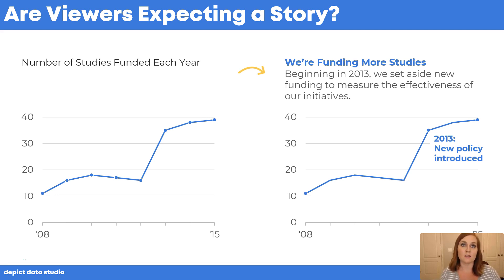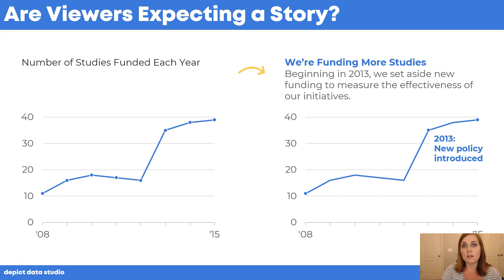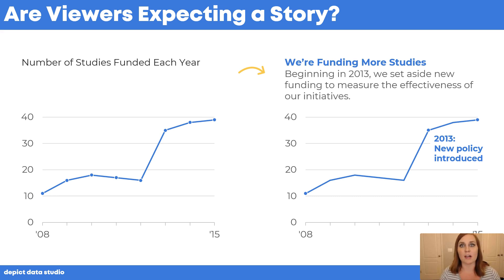This is what my audience is hoping for and expecting. They want the storytelling title, the clear subtitle, the darker colors, and the annotations. It saves them a lot of time so they don't have to do all of that interpretive work themselves — they're trusting me to interpret the graph for them.